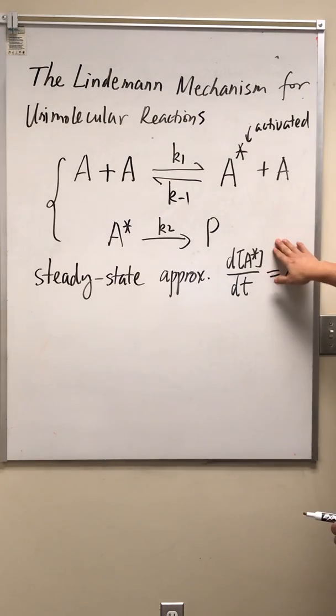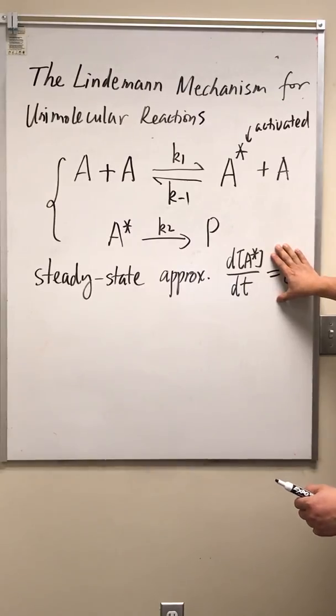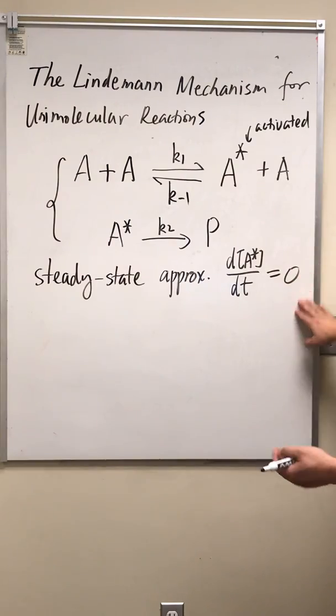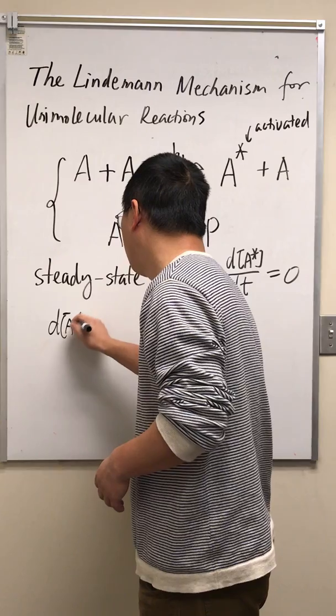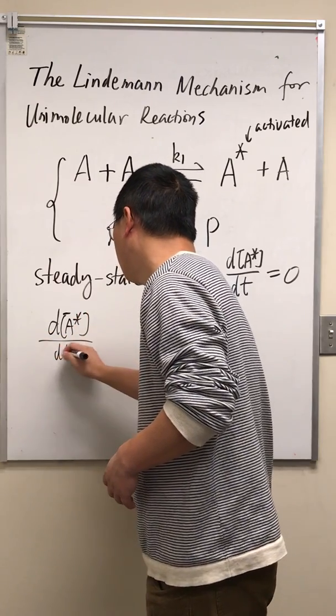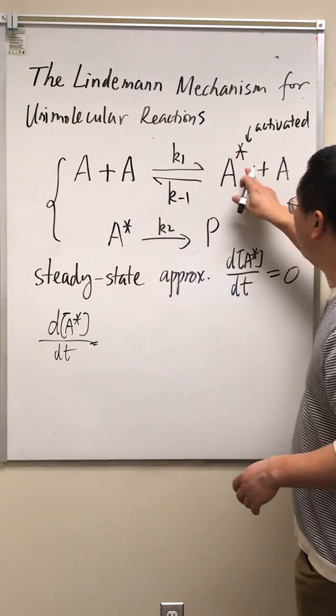Now, this is because A star is unstable, it's activated. The concentration of A star is extremely low during the entire reaction. That means we can assume the change of A star is zero.